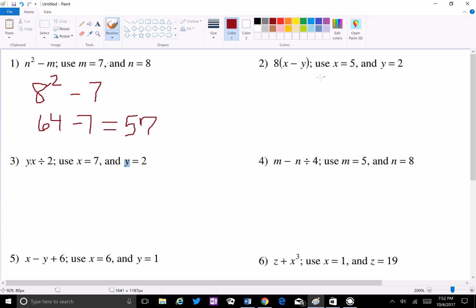And then with this one you have 8 times x minus y, and you would plug these into here, so you'd have 8 parentheses 5 - 2 which would be 8 times 3 because you want to do everything in the parentheses first before you do anything on the outside, and that would come to 24.